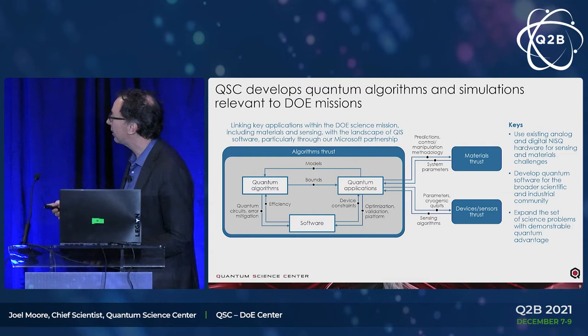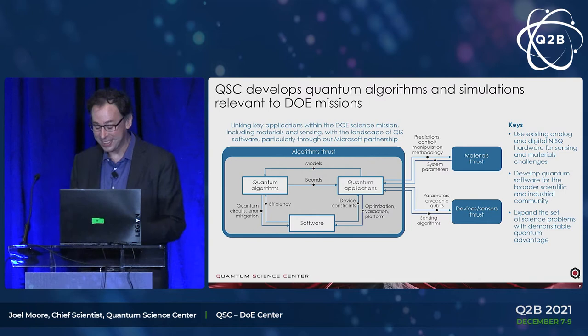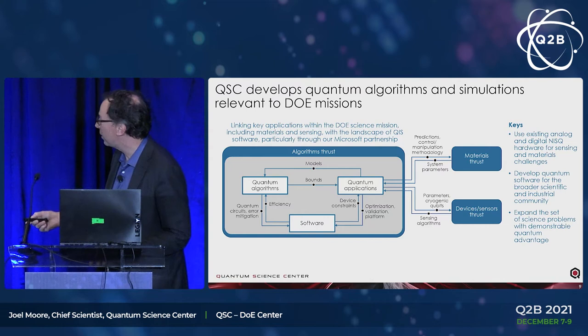We are very interested in quantum software development, imitating what the DOE did in the past. A big thing for pretty much all of these DOE centers is: quantum advantage has probably been demonstrated in a sense that might satisfy a theoretical computer scientist, or if not, it will be soon. But it's probably on problems that don't have a big market in industry or government. Can we bring more science problems to quantum advantage in the fairly near term?